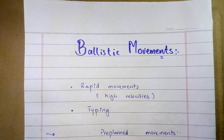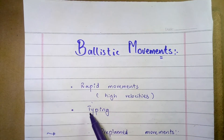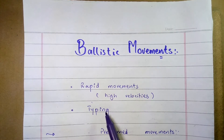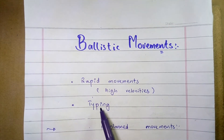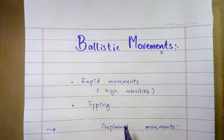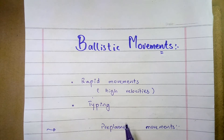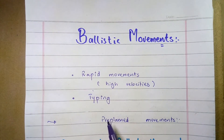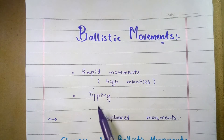Ballistic movements can be defined as the muscle contractions that have maximum velocity. These are the rapid movements with maximum velocity over a very short period of time — such as movements of the fingers in typing — that occur so rapidly that it is not possible to receive information either from the periphery or from the cerebellum back to the motor cortex before the movements are over.